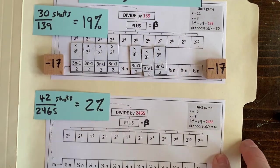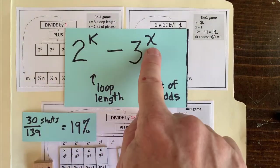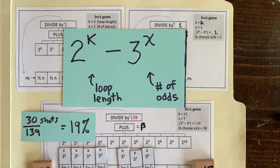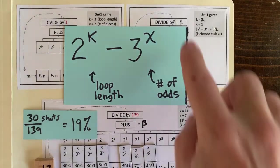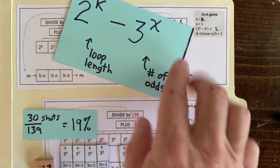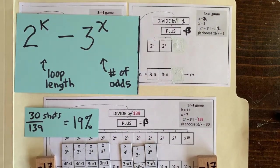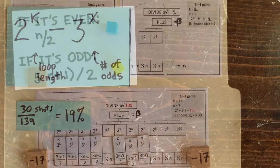We want to pick k, the loop length, and x, the number of 3n plus 1 operations, so that the difference 2 to the k minus 3 to the x is very small. If it's extremely small like 1, then it doesn't matter how we arrange the pieces because everything's a multiple of 1, and every loop is going to be an integer loop. If it's small like 5, then we can still get lucky pretty easily since lots of numbers are divisible by 5.